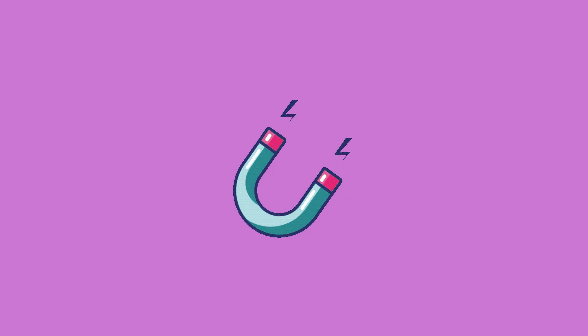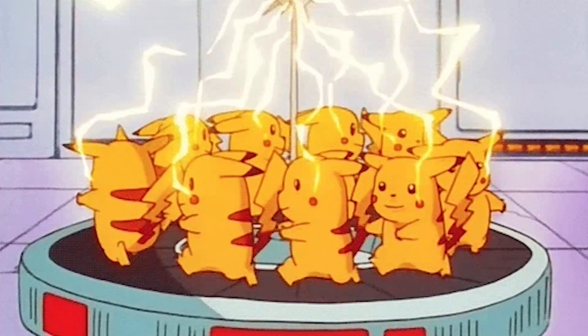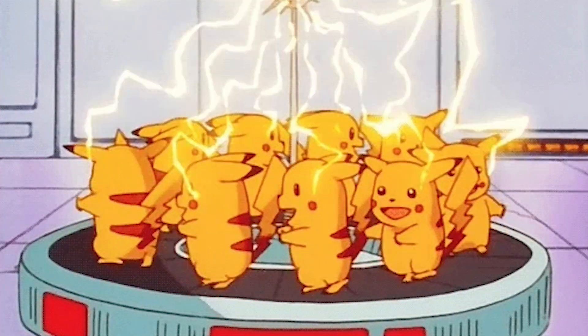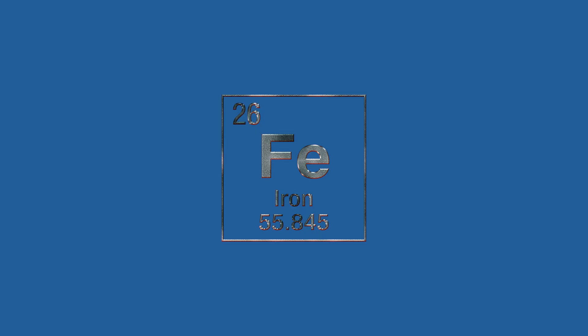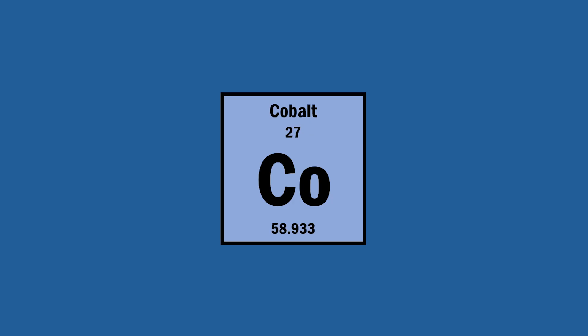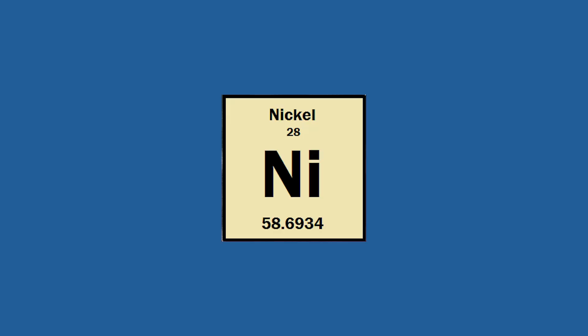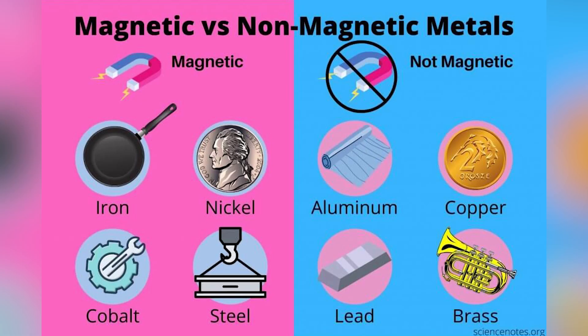But in a magnet, electrons spin in the same direction. Only a few materials have this property — iron, carbon, cobalt, and nickel, for example. Rocks, minerals, and alloys also contain a density of elements that make them magnetized.